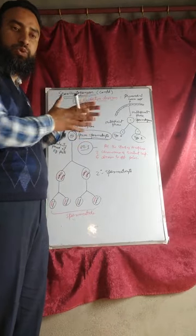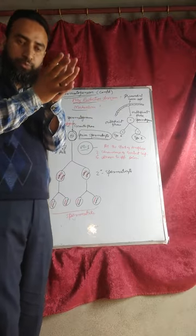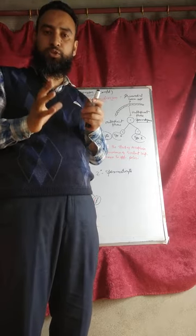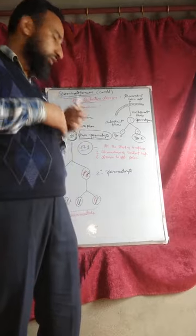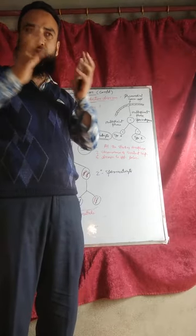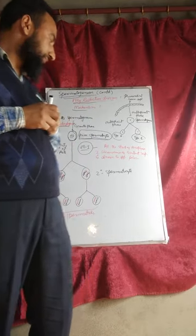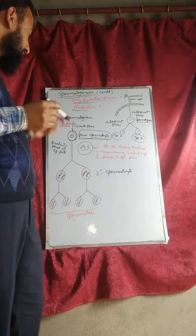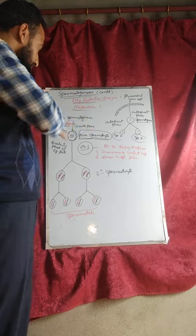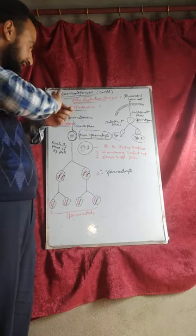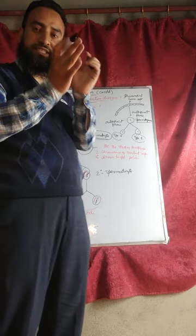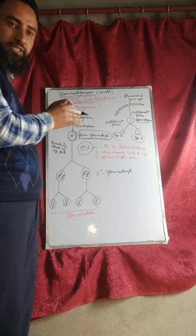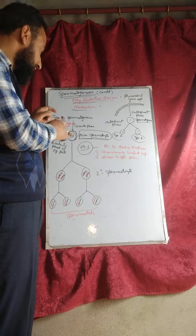In prophase I, crossing over takes place. The homologous chromosomes — one paternal and one maternal — undergo synapsis. These homologous chromosomes pair together; they undergo synapsis due to attractive forces. At the end of this prophase, there is disjunction of the homologues.